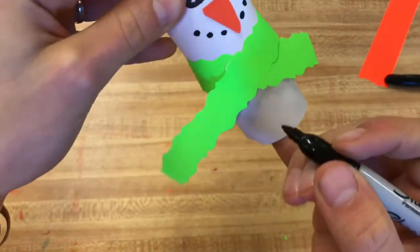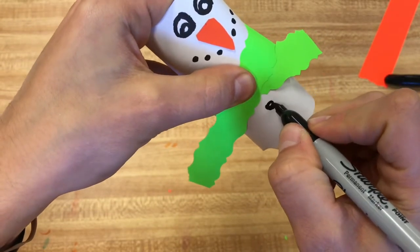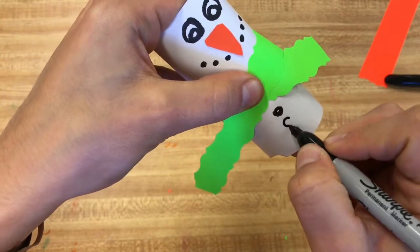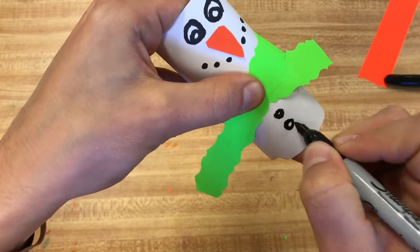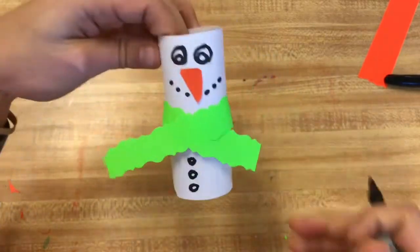And then we'll give them three little buttons down there. You want to leave a little white in there, or you can color that all in. And just like that, there is our snowman out of a toilet paper roll with just a little scrap paper. Looks awesome, super cool!